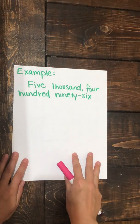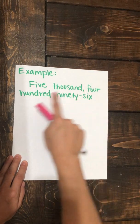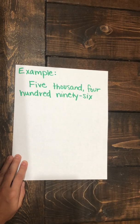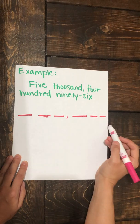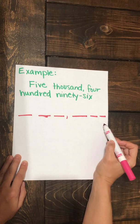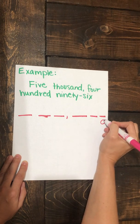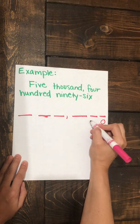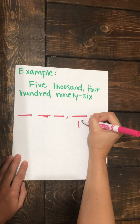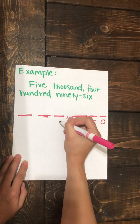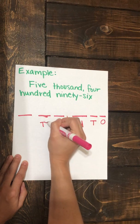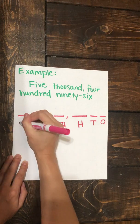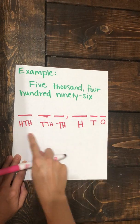Let's look at our first example: 5,496. Let's first draw our place value organizer. Starting over here on the right, this is the ones place. Moving to the left, our next place is the tens place, then the hundreds place, then the thousands place, then the ten thousands place, and finally the hundred thousands place. Here's our place value organizer.